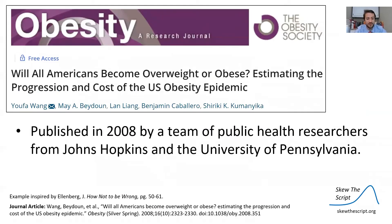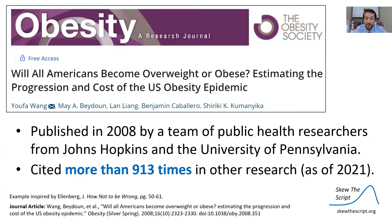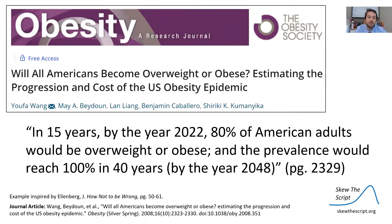For example, this article was published in 2008 by a team of public health researchers from Johns Hopkins and the University of Pennsylvania. This is a very popular article, cited more than 900 times in other research as of 2021. We can isolate this quote from the article, which says: in 15 years, by the year 2022, 80% of American adults would be overweight or obese, and the prevalence would reach 100% in 40 years, by the year 2048.